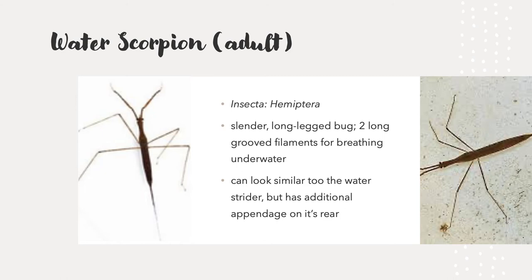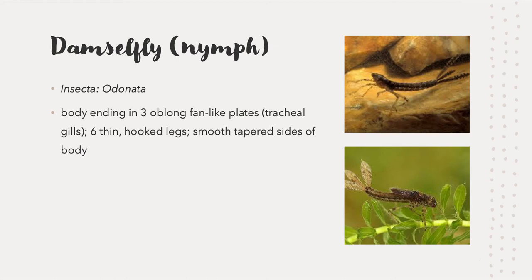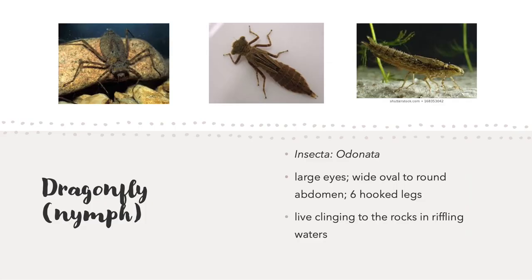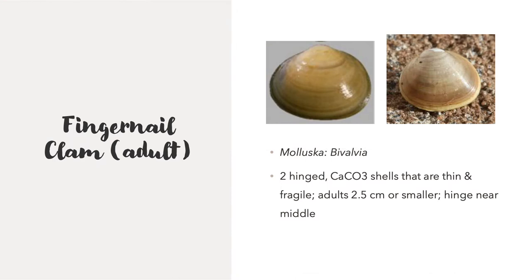The adult water scorpion also has slender, long legs, but has two long, grooved filaments for breathing underwater. It can look similar to the water strider but has an additional appendage on its rear. The damselfly nymph has a body ending in three oblong, fan-like plates, six thin hooked legs, and smooth, tapered sides of the body. The dragonfly nymph has large eyes, a wide oval-to-round abdomen, and six hooked legs, and lives clinging to rocks in riffling waters. The fingernail clam has two hinged shells that are thin and fragile, hinged towards the middle, and the adults can be 2.5 centimeters or smaller.